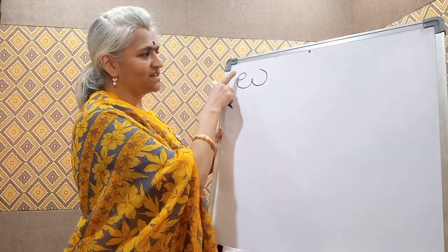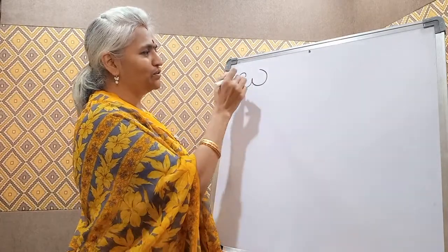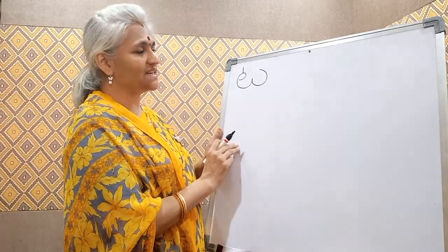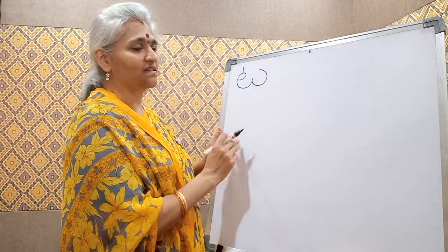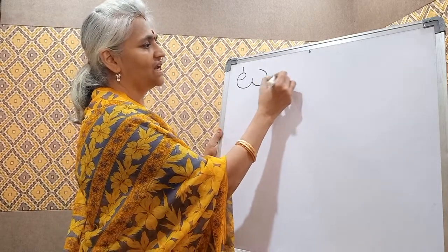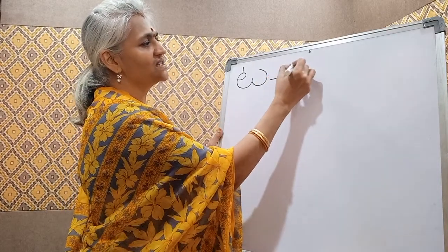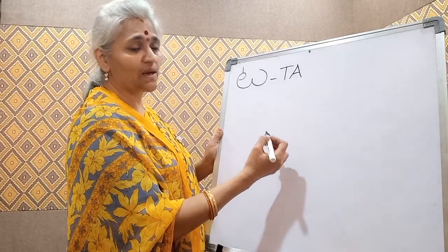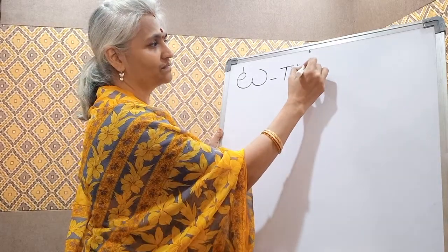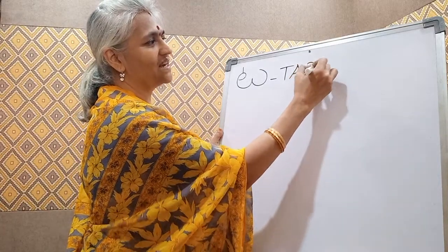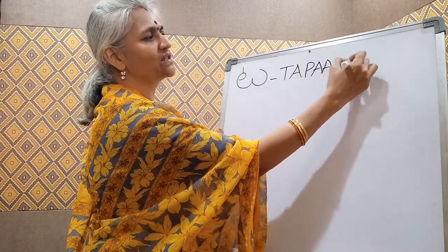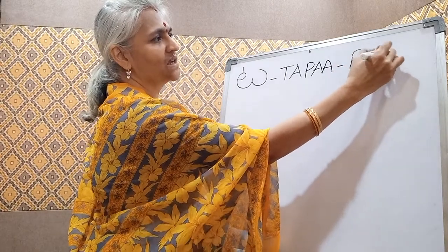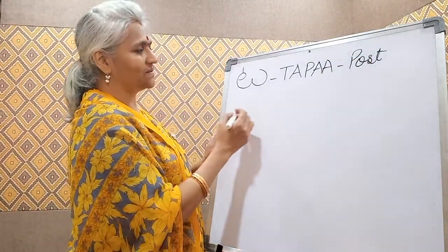To write TA, make a small circle and a W with a standing line on top. That is TA. An example word is TAPA — TAPA means post.